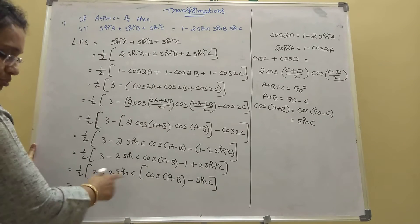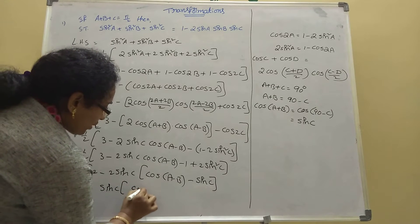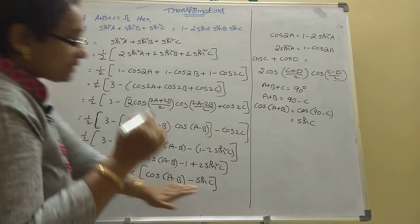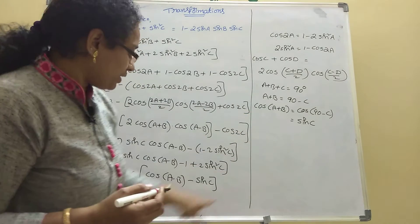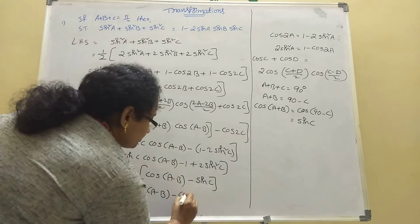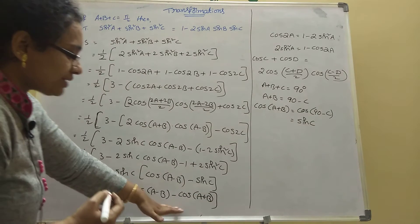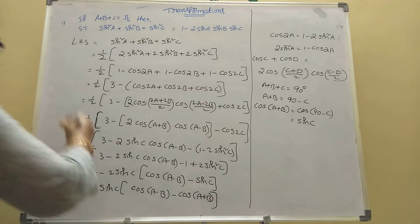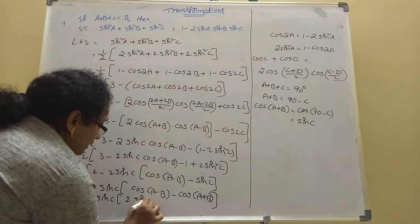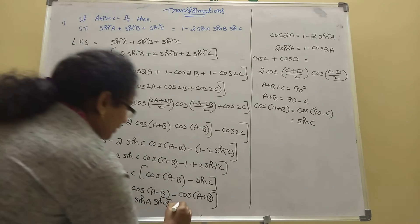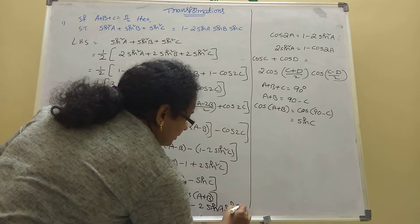Split the 2, giving 1 minus sin C times [cos(A minus B) minus sin C]. Now sin C here equals cos(A plus B). So inside the bracket it is cos(A minus B) minus cos(A plus B). The formula for cos(A-B) minus cos(A+B) is 2 sin A sin B. So multiplying: 1 minus 2 sin A sin B sin C.